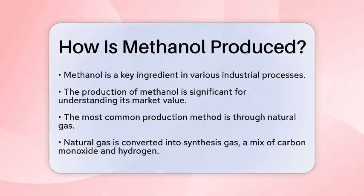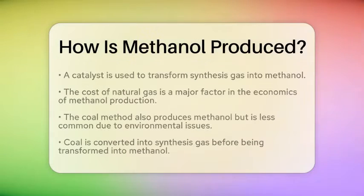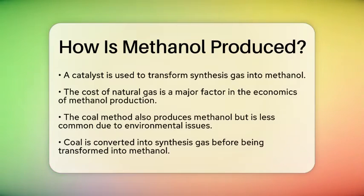The most common method is the natural gas method. In this process, natural gas is transformed into methanol through several steps. First, natural gas is converted into synthesis gas, which is a mixture of carbon monoxide and hydrogen. This synthesis gas is then reacted with a catalyst to produce methanol. The cost of natural gas plays a significant role in the economics of this method, making it a critical factor for producers.